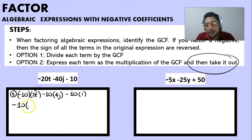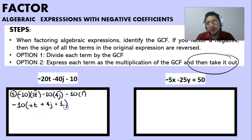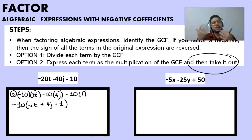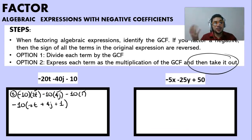We take out the common factor minus 10, and we're left with 2T, 4J, and 1 — giving us minus 10 times (2T + 4J + 1). There are two ways to factor these expressions, and it's very beneficial to take out the negative.